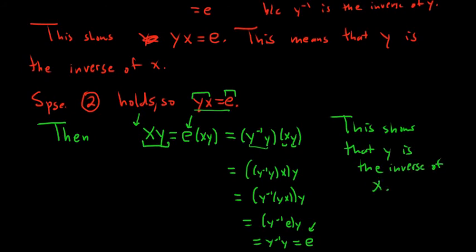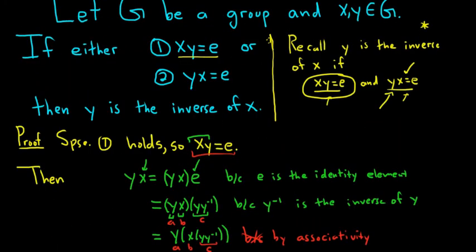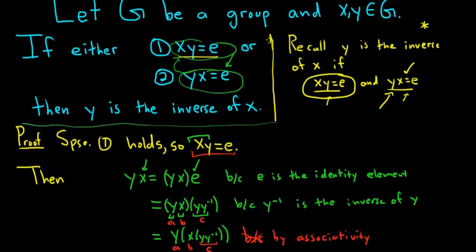So it's essentially saying that whenever you have a one-sided inverse, you have the inverse. If you have xy = E, then yx is also going to equal E, so y is the inverse of x. Likewise, if yx = E, then xy = E, and therefore y is the inverse of x. It's enough to show a one-sided inverse to demonstrate a genuine inverse. I hope this video has been helpful. Thanks for watching.